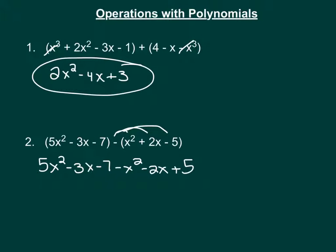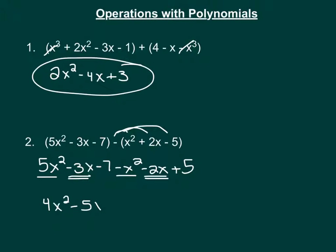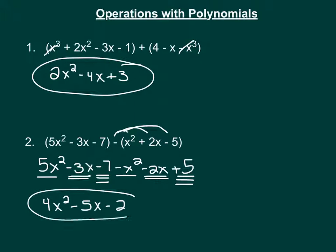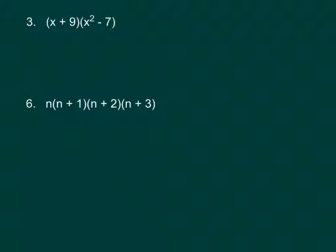Now we combine like terms: 5x squared minus x squared gives 4x squared. Negative 3x and negative 2x combine to give negative 5x — you just add the numbers in front and keep the variable. And then combining negative 7 with positive 5 gives us negative 2. So in number 1 we did addition, and number 2 we did subtraction.